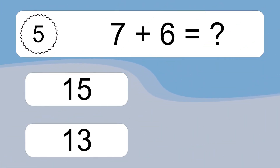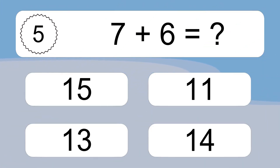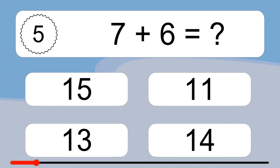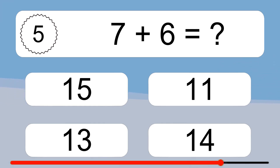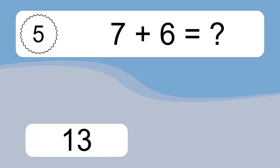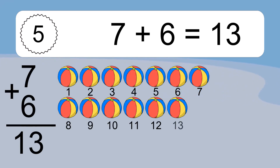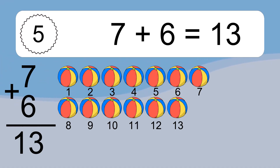7 plus 6 equals what? 7 plus 6 equals 13. Let's count it: 1, 2, 3, 4, 5, 6, 7, 8, 9, 10, 11, 12, 13.